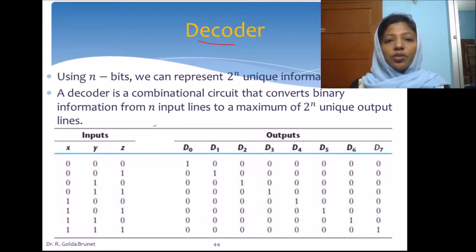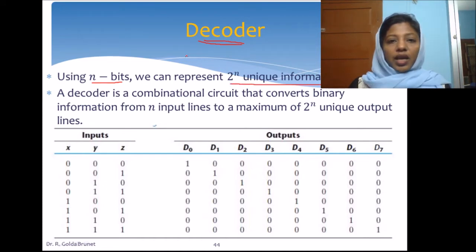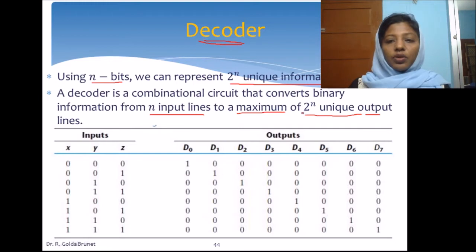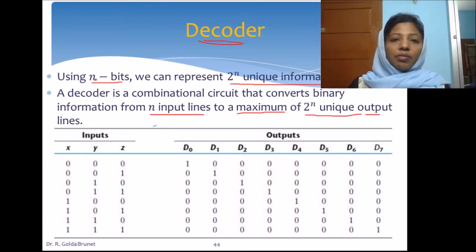The next circuit is a decoder, one of the important circuits used in our system. If we have n bits, we can represent 2 power n unique information. A decoder is a combinational circuit that converts binary information from n input lines to a maximum of 2 power n unique output lines. We can have even less than 2 power n output lines, but the maximum we can generate is 2 power n output lines.